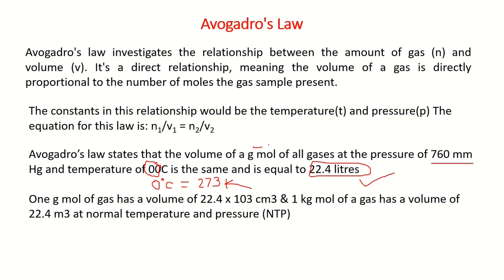Here I am talking about gram mole. If you are talking about 1 kg mole — that is 1000 grams — then 1 kg mole of a gas occupies a volume of 22.4 meter cube. This is at normal temperature and pressure (NTP), which means this pressure value and this temperature value.